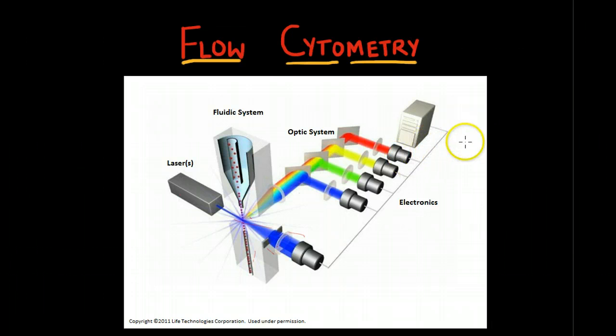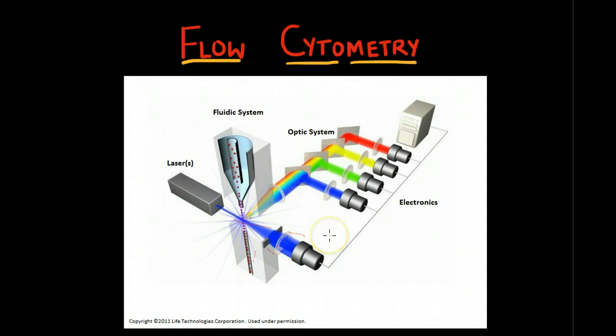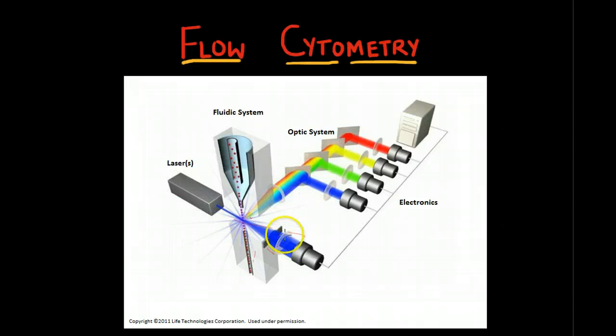By analyzing the fluctuations in brightness at each detector, it is possible to derive various kinds of information about the physical and chemical structure of these cells.